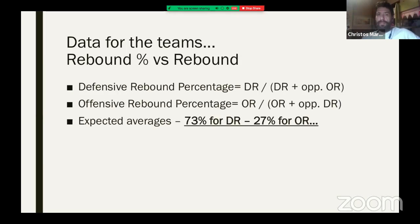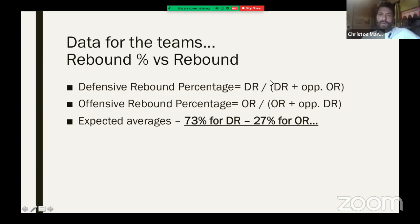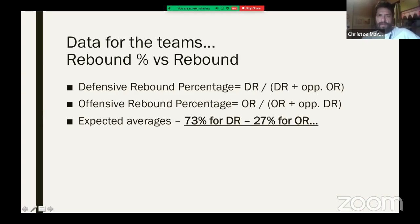The same applies to rebounding. Defensive rebound percentage and offensive rebound percentage are different from raw rebound totals. When a team averages 20 defensive rebounds and another averages 15, you don't know how many rebound chances there were. The formula is: defensive rebounds divided by (defensive rebounds plus opponent's offensive rebounds). Teams should average around 73% defensive rebound percentage and about 27% offensive rebound percentage.